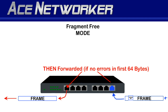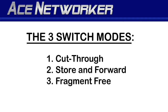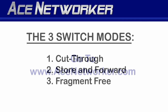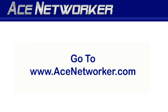Similar to store-and-forward, if there's any question about the frame at that point the switch can discard it. It's not reading all the way down to the FCS field, so it can't fully determine if the frame is a runt or giant, but it can make a good determination of whether the frame is error-free or prone to collisions. There are additional videos that go further in depth about switch modes and how to use and configure them on a network.